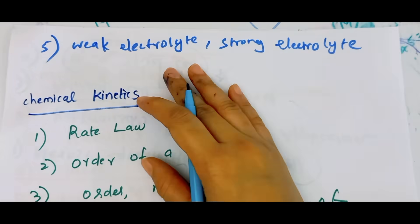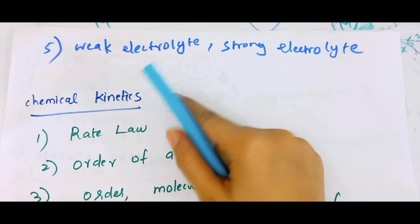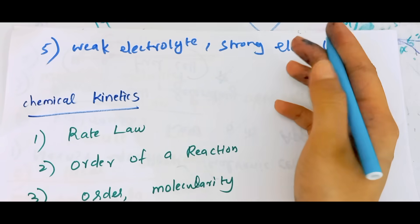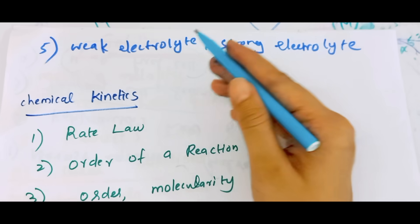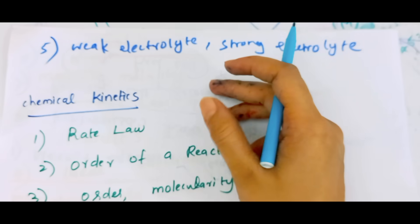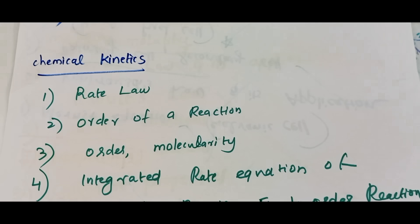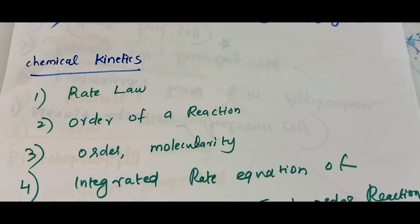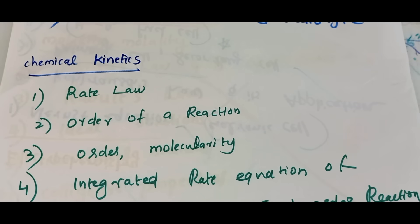If you look at weak electrolyte and strong electrolyte — the graph. Now we are talking about this. I will tell you. We have already had a few named reactions: Gattermann, Rosenmund, Sandmeyer.